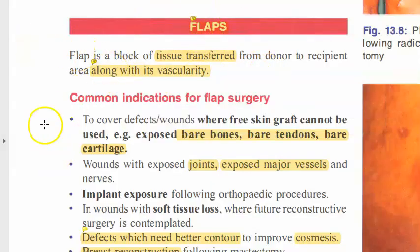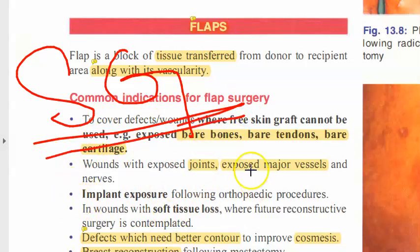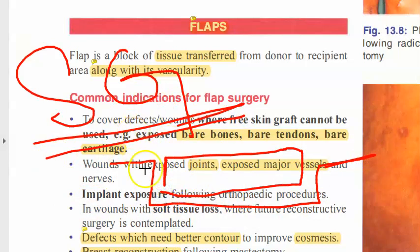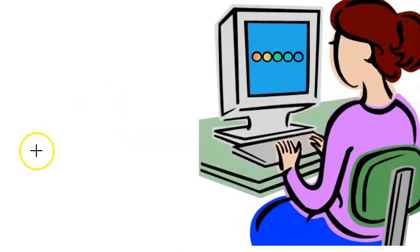Let us look at flaps. You have so far looked at what a skin graft is. In burns patients or any other degloving injury or avulsion, you want to cover the wound with a skin graft. The requirement was that there should be a vascular wound with blood vessels so that the graft can revascularize and survive.